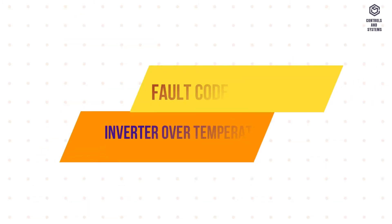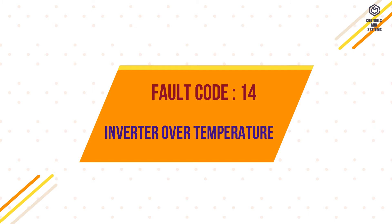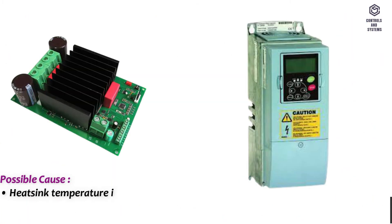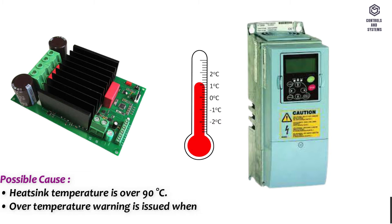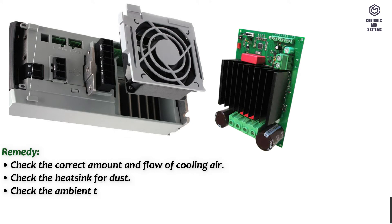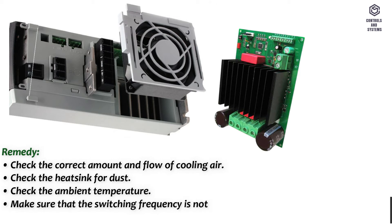Fault code 14 – Inverter over temperature. Possible cause: heat sink temperature is over 90 degrees Celsius. An over-temperature warning is issued when the heat sink temperature exceeds 85 degrees Celsius. Remedy: check the correct amount and flow of cooling air, check the heat sink for dust, check the ambient temperature, and make sure the switching frequency is not too high in relation to ambient temperature and motor load.